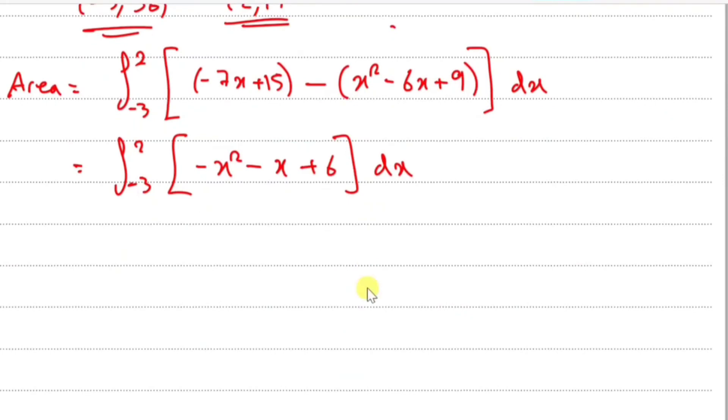Now integrating this carefully. All you do is raise the power up. So -x² becomes -x³/3. x becomes x²/2. And for a constant, you stick an x in, so +6x. Then you close it and put your limits of integration.